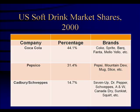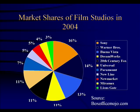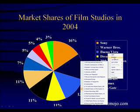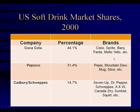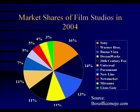In soft drinks, Coca-Cola, Pepsi, and Cadbury Schweppes are the major dominant firms. In film studios, the biggest is Sony, after that comes Warner Brothers and Buena Vista, then DreamWorks, 20th Century Fox, Universal, Paramount, and others. It's a little more competitive than a lot of oligopolies, but it's still oligopolistic.